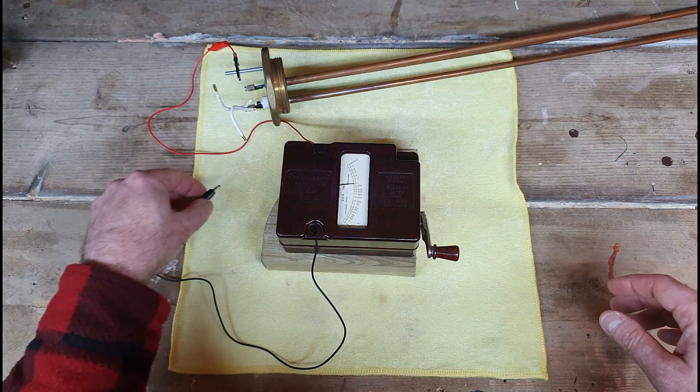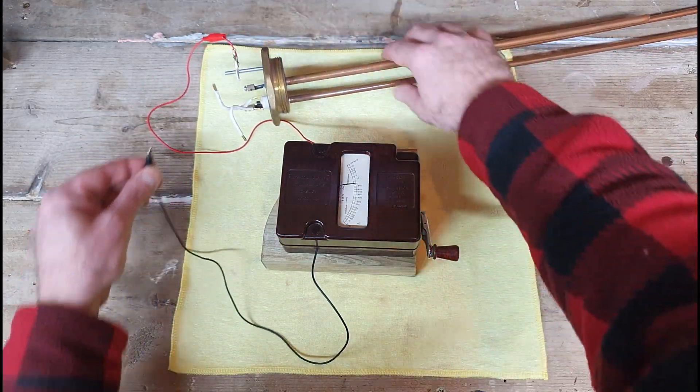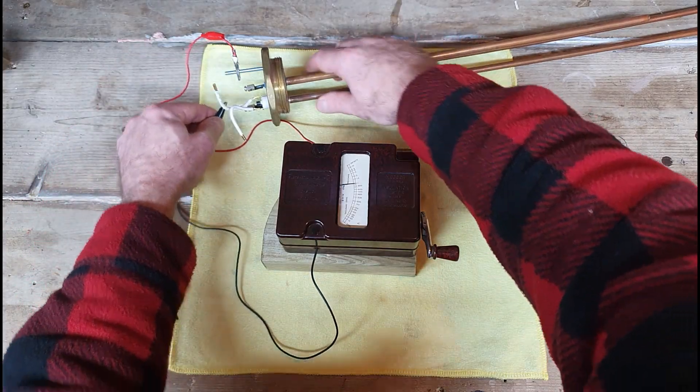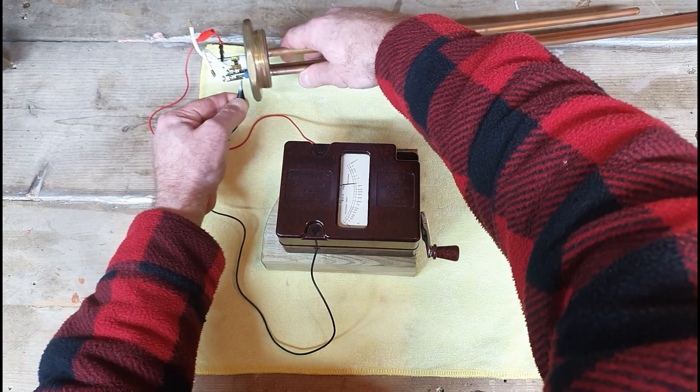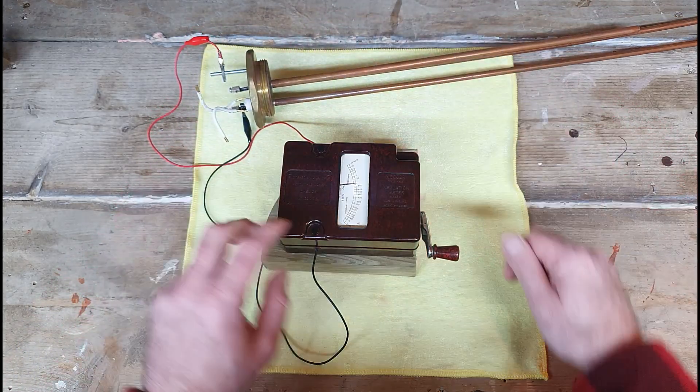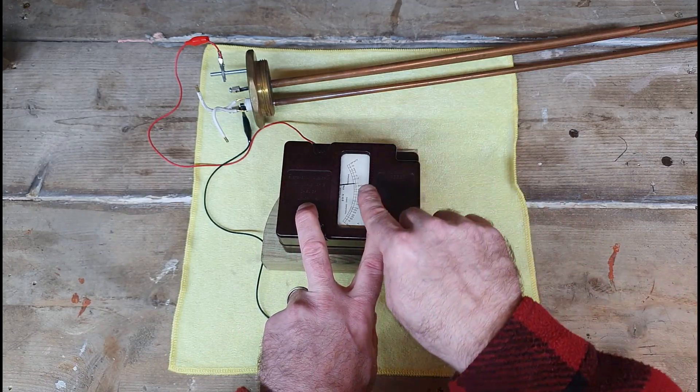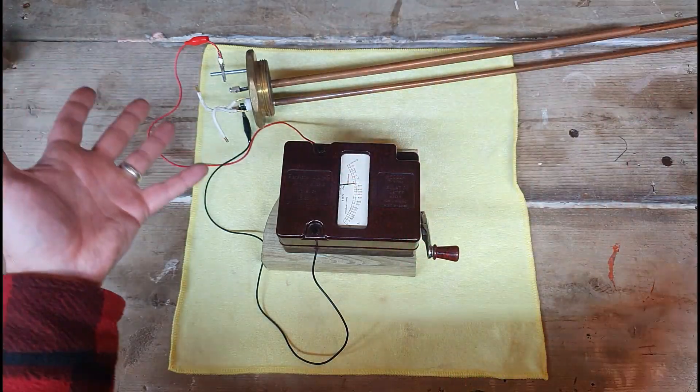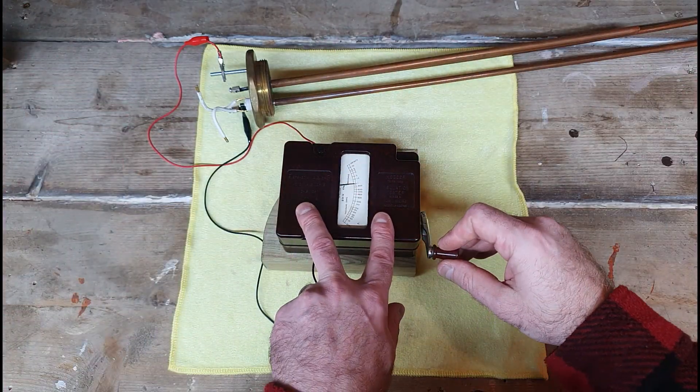If I connect these up again onto the earth terminal there on the thread and connect the black up to any one of these terminals, and go spinning, we should see the analog needle fly up the infinity scale because this one's working perfectly. It's brand new, it's out the box basically.